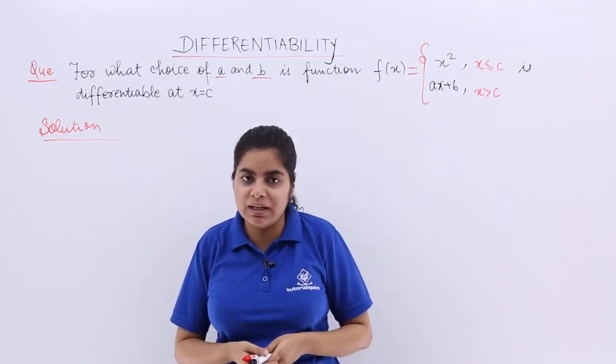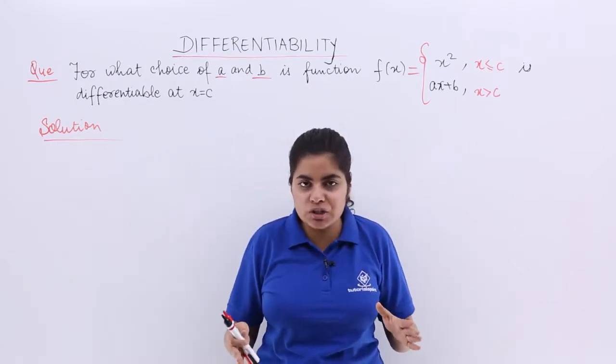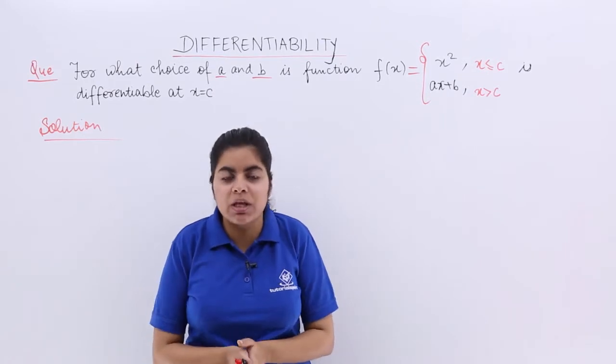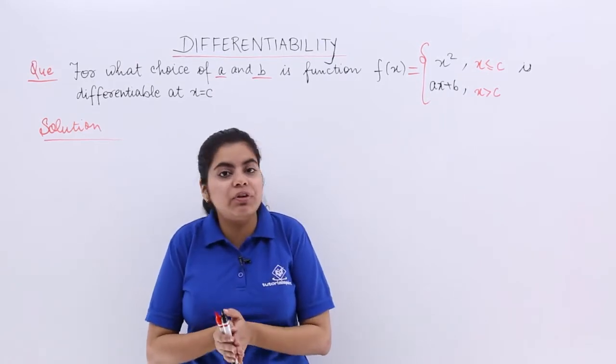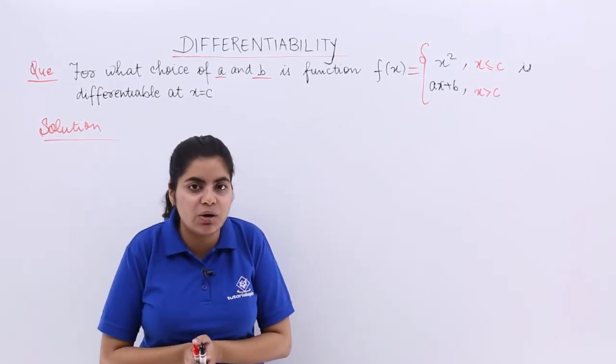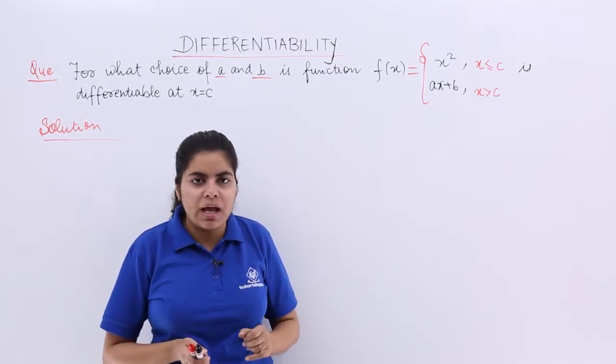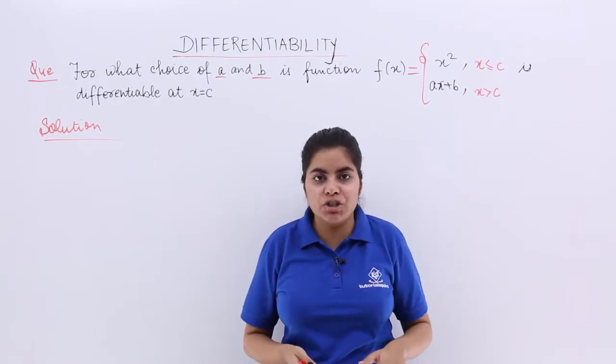Already the heading solution is made. That means you have been given a function. The function has been already said that it is differentiable at x is equal to c. With the knowledge of differentiability, you have to find out the values of A and B involved. Now, I know that every differentiable function is continuous.